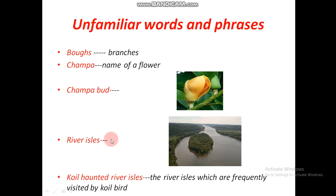Next one is river isles. As you know, isle is the poetic form of island. Isle is a small island in the river — a small piece of land in the middle of the river is called a river isle.